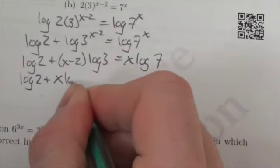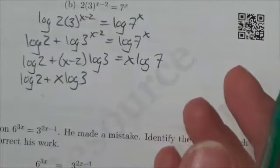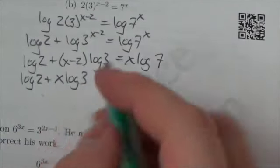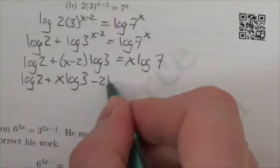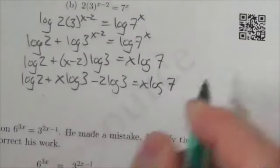I've got to now distribute that log 3, which is just a number by the way. It's just a fraction here, but I got to distribute that to both of those terms. And I get x log 7 on the other side here.